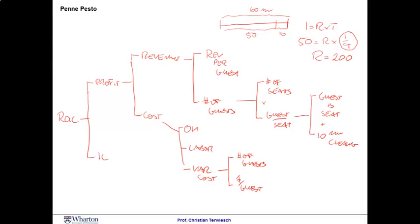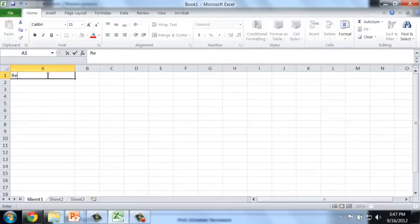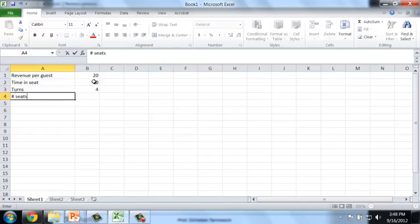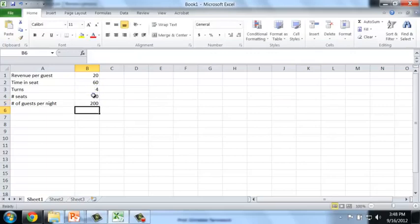I'll now turn to Excel and actually run the numbers. Alright, let's start with the revenue calculations. We begin by looking at the revenue that we get per guest, 20 bucks. Then we have the time that the guest is in the seat plus the cleaning time, which we said right now is 60 minutes. That allows us to turn the table 240 minutes divided by 60 equals to four times. Since we have a number of seats equal to 50, we can get revenue, so we can get, excuse me, number of guests first per night is simply the turns times the number of seats, and that is 200 guests per night. Next, we'll look at our total revenues as simply the 200 guests that we serve times $20 per guest equals to $4,000 revenue per evening.